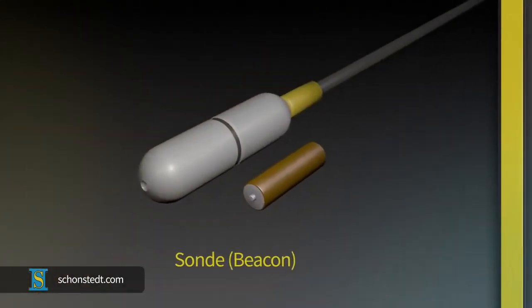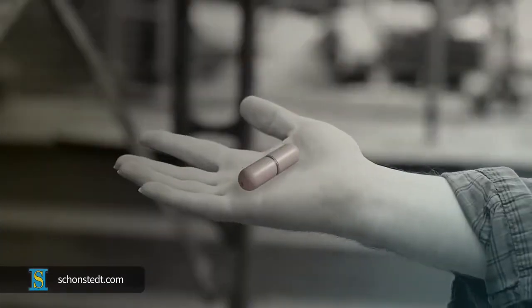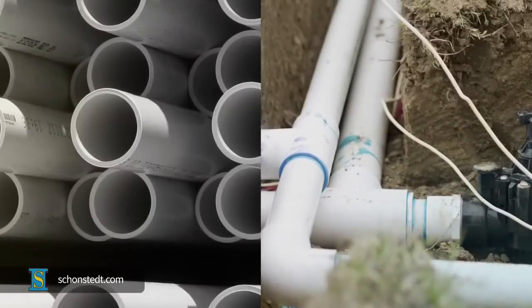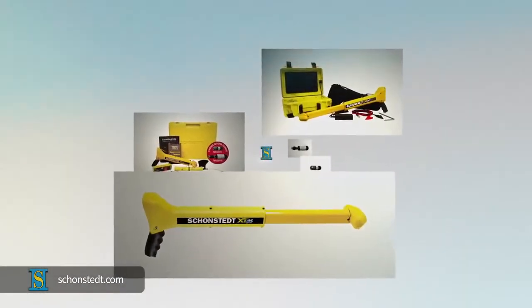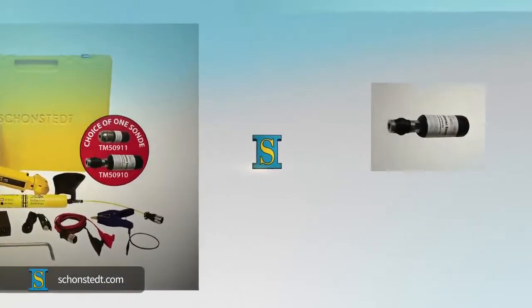A sonde, sometimes referred to as a beacon, is a small battery-operated transmitter that typically fits in the palm of your hand and can be inserted inside PVC pipes and traced or detected with pipe and cable locator receivers or with dedicated sonde locators.